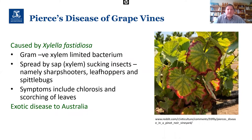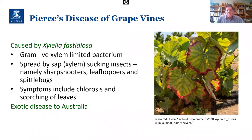Another one that's very important for our wine industry is Pierce's disease of grapevines. This is quite a severe disease, particularly in the American wine industry in California, and it's spread by sap or xylem-sucking insects. This is one of the cases where there's a vector or insect that's responsible for transmitting bacterial problems. It causes chlorosis and scorching of leaves, photosynthesis reduction, and yield loss — so this is one we need to keep out of Australia for our wine industry.